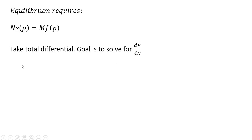So, to do that, I'm going to take the total differential of both sides of this equilibrium condition. Starting on the left-hand side, the derivative of N is 1, so we're just going to have s(p)·dN.